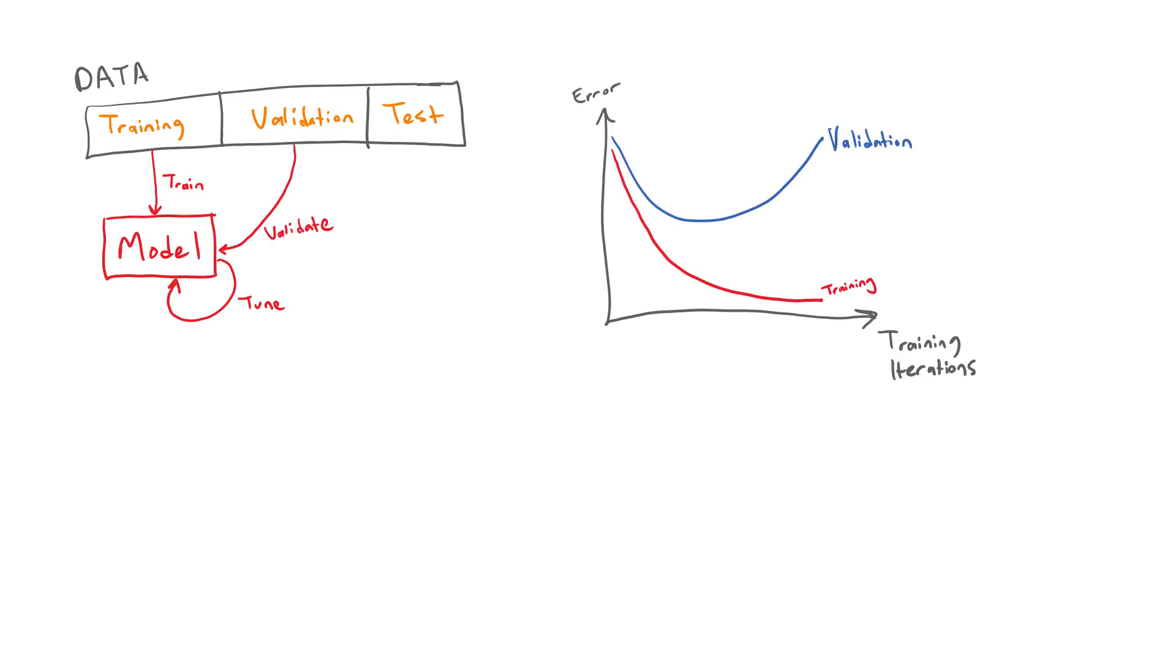Let's take a look at an example where we look at the error on the validation set to decide on the model capacity. There are several factors that affect the model capacity, such as the number of trainable parameters and training iterations.